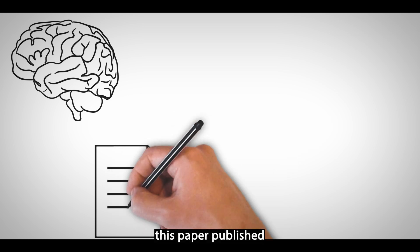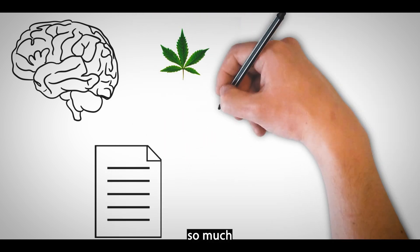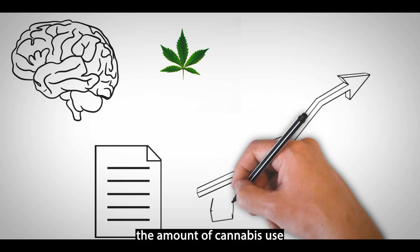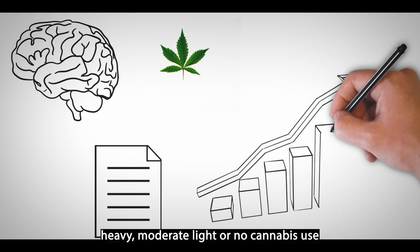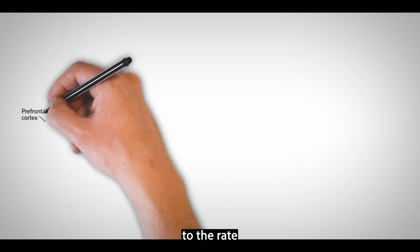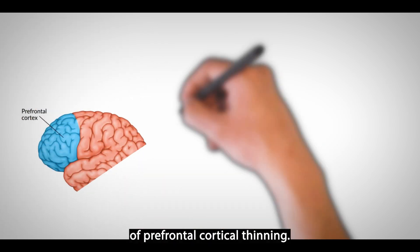The reason I like this paper published in Translational Psychiatry this year so much is that they link the amount of cannabis use, heavy, moderate, light, or no cannabis use to the rate of prefrontal cortical thinning.